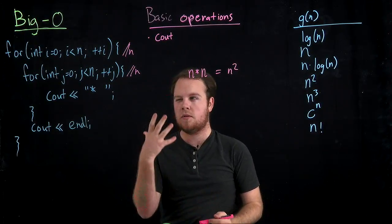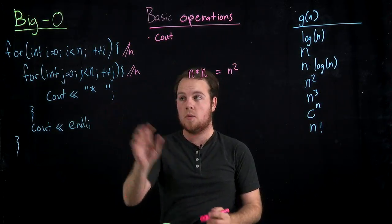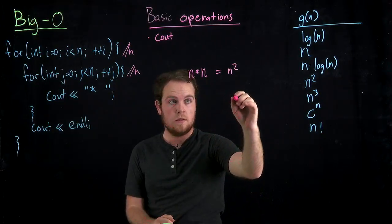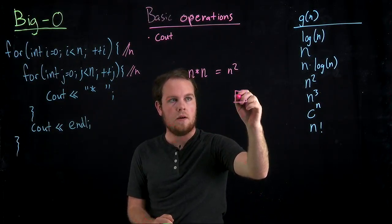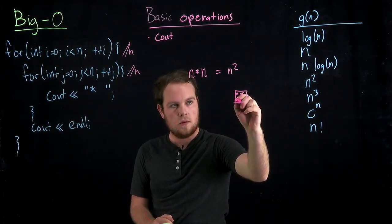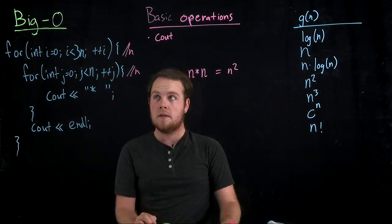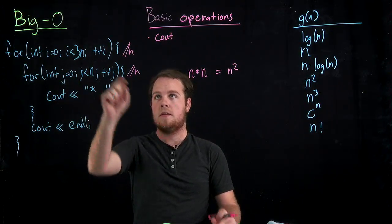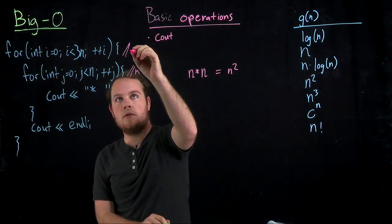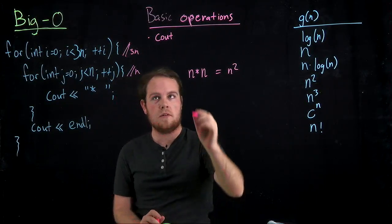You can kind of intuitively figure that out because this code prints a rectangle, or sorry, a square of asterisks. Now I've changed the code so that it's 3n instead of 1n over here. So 3n.